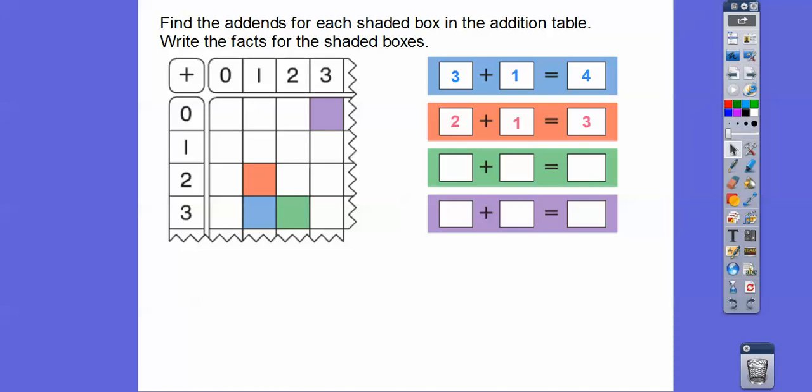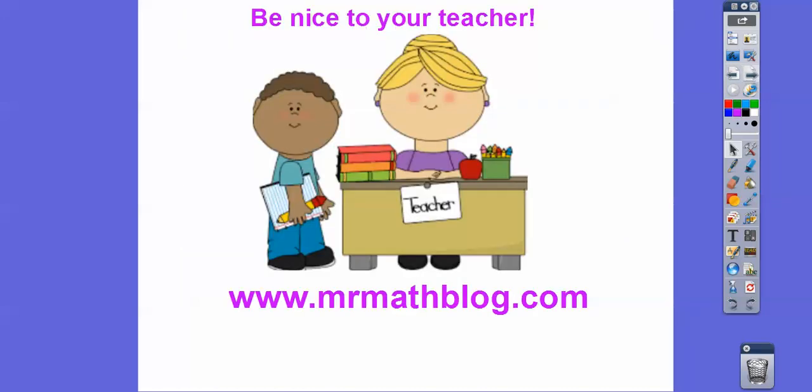Now let's look at the green box. This is 3 + 2. 3 + 2 is going to be one more than 3 + 1, so that's 5. Finally the purple, 0 + 3. 0 + 3 is 3. All right, you guys, I hope that makes sense, and be good to your great teacher. Take care.